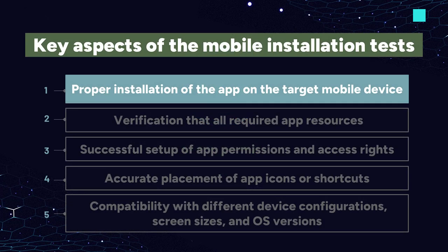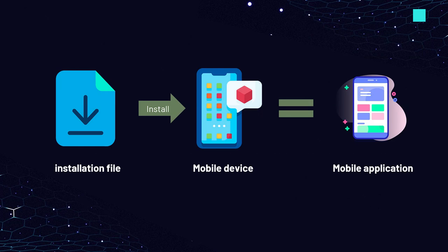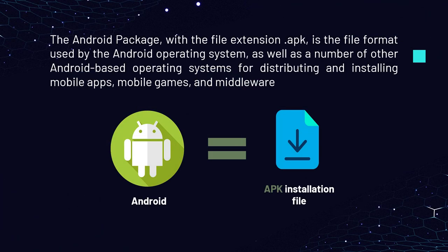Key aspects tested during mobile installation tests include proper installation of the app on the target mobile device. The mobile application consists of an installation file that needs to be installed on the desired mobile device in order to launch the application. Android devices use APK files for installation. The Android package with the file extension .apk is the file format used by the Android operating system for distributing and installing mobile apps, mobile games, and middleware.